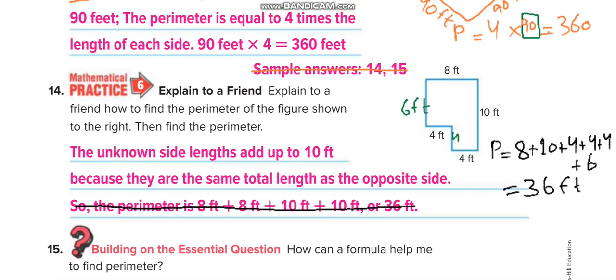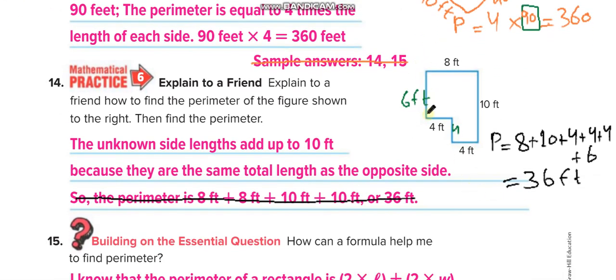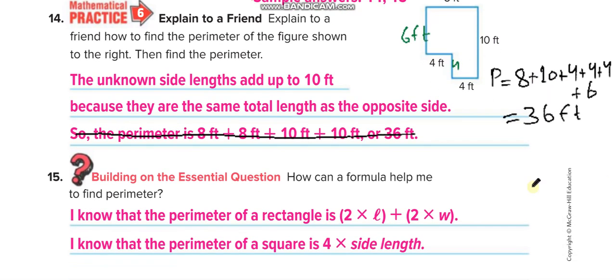Here you have to find the unknown side. You can see 4 feet and 4 feet on two sections, and the total opposite side is 10, so the remaining piece must be 6. This is 6 and this is 4. Add all sides to find the perimeter. That's the explanation — I hope you understand the lesson.